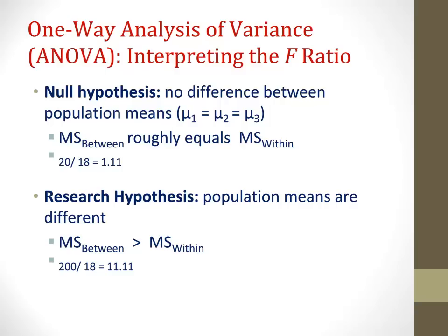Alternatively, the research hypothesis states the population means are different. What we're looking for is the F-ratio to be much larger than 1, meaning the between-groups variance is much larger than the within-groups variance. For example, if within-groups variance is still 18 but between-groups variance is 200, dividing 200 by 18 gives an F-ratio of 11.11 — much larger than 1 — from which we can conclude there is a large portion of variance due to the treatment, a difference between groups due to different treatment conditions.